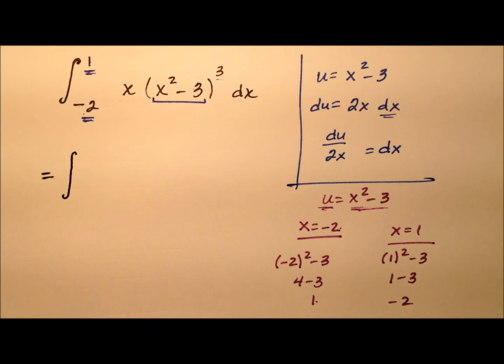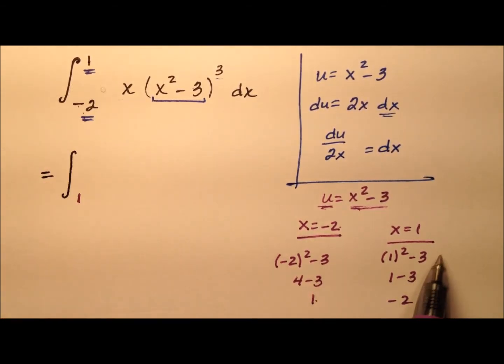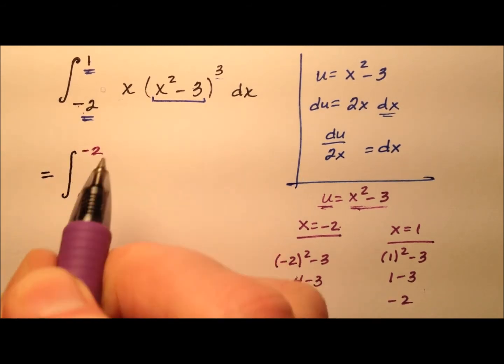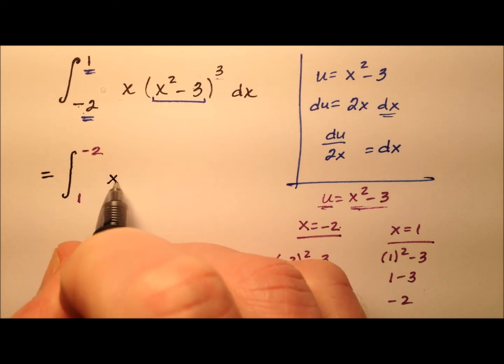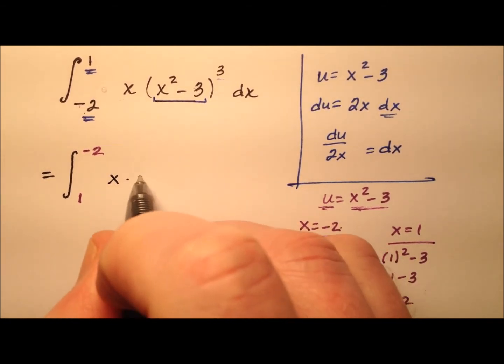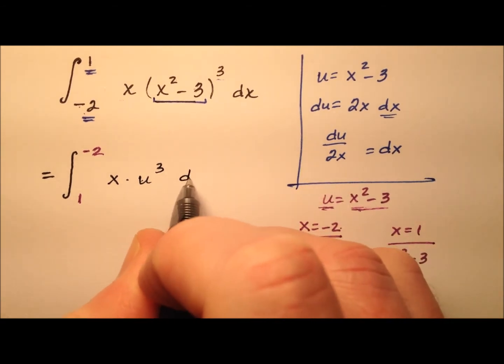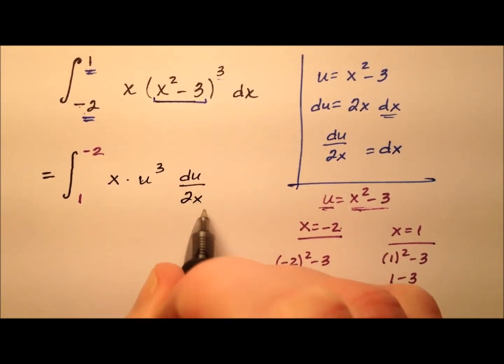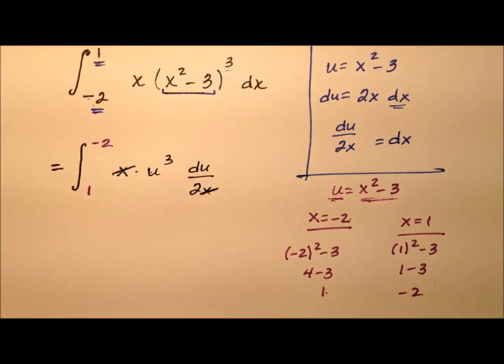So it'll be the integral, let's see, our negative 2 changed to a 1, and our 1 changed to a negative 2 for limits of integration. And we had x times u cubed, and then our dx was du over 2x. Well, we see the x's cancel as we thought they would, which is really nice.